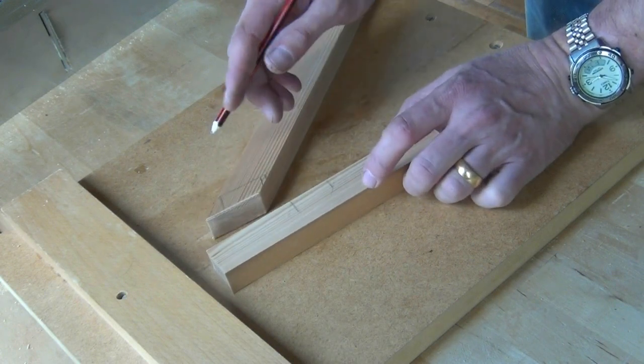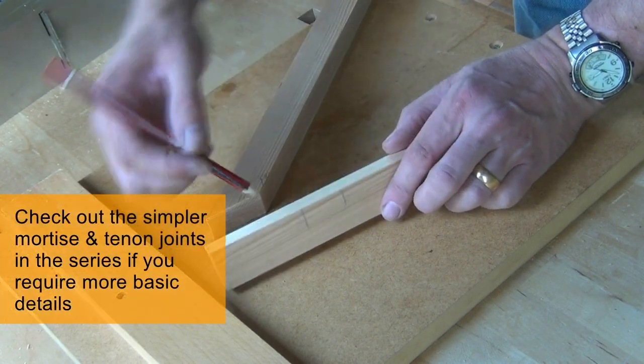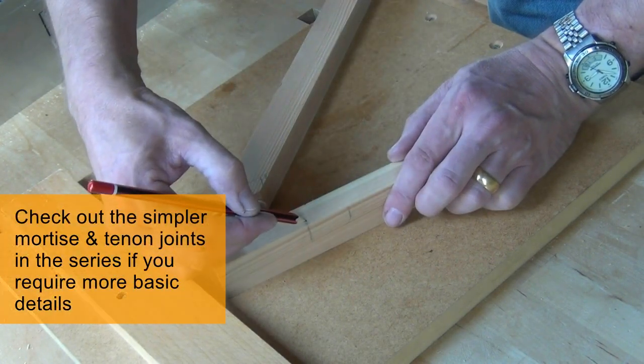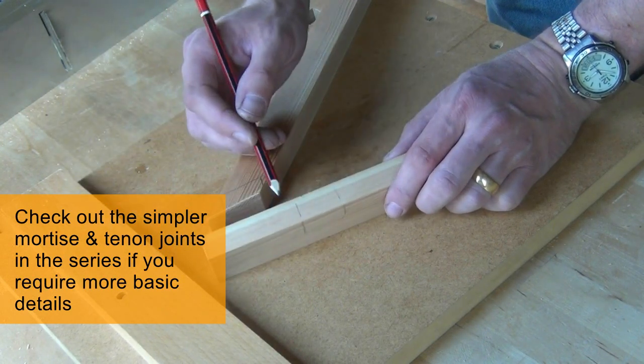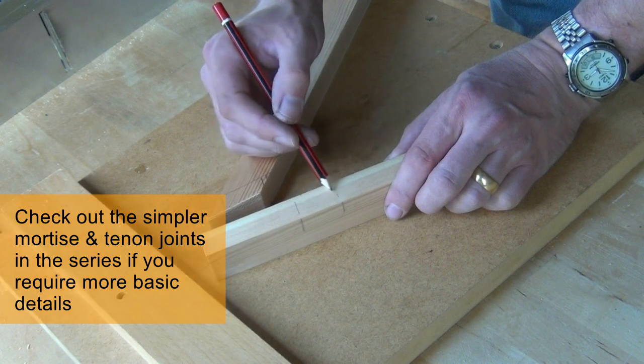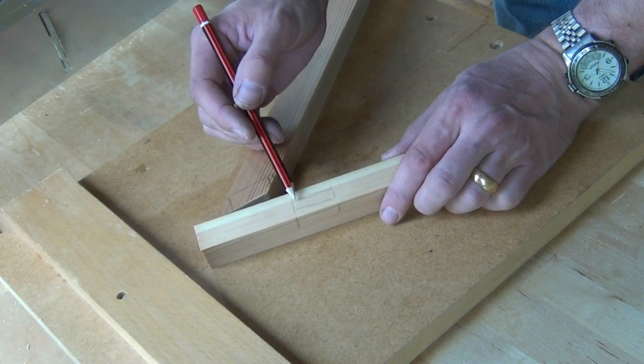So the first thing is to prepare the mortise in the normal way and you can check the videos I've done on mortise and tenon joinery to find out how we create a mortise of about a third the width of the material.